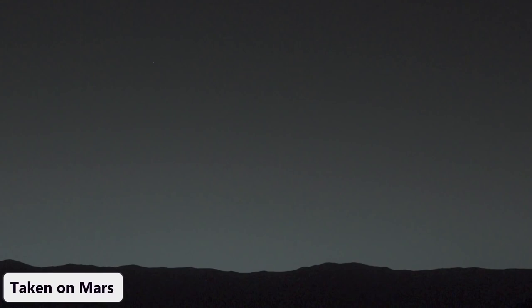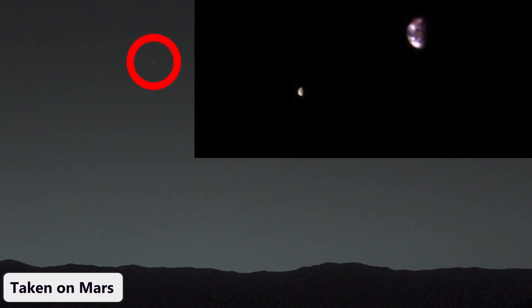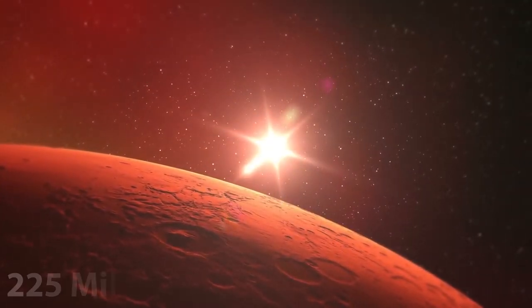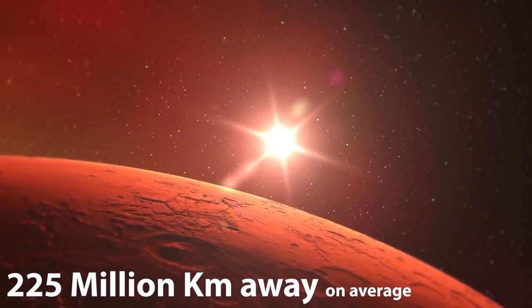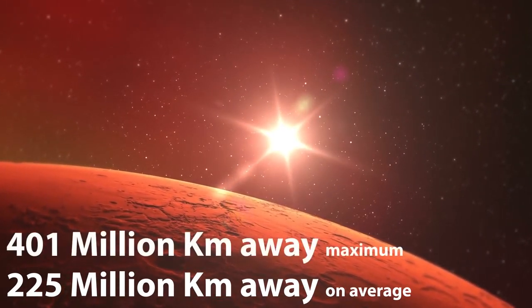This is a photo that was taken on Mars, and that tiny dot that you see there is Earth as seen from the Martian surface. On average, Mars is an incredible 225 million kilometers away from Earth, but that distance can be as high as 401 million kilometers.